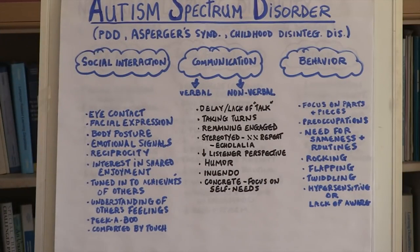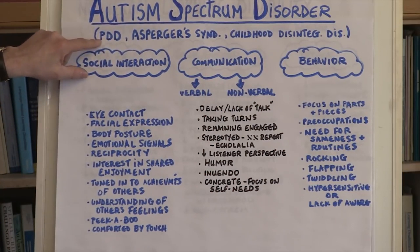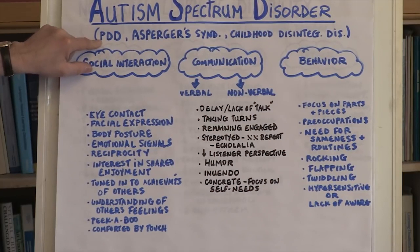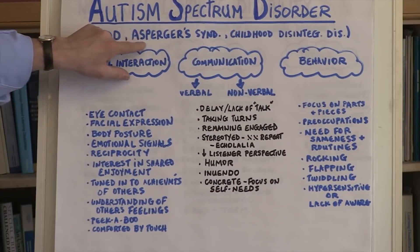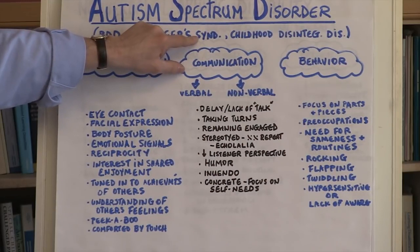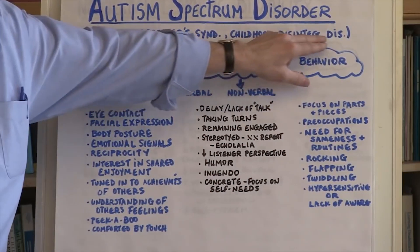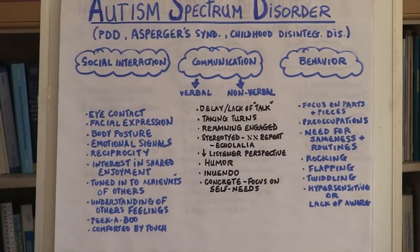When we talk about Autism, we often talk about Pervasive Developmental Disorder — PDD, also referred to as PDD-NOS, or not otherwise specified. We talk about Asperger's Syndrome, sometimes referred to as High Functioning Autism, and we talk about Childhood Disintegrative Disability or Disorder.